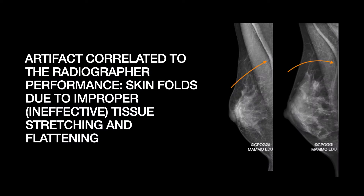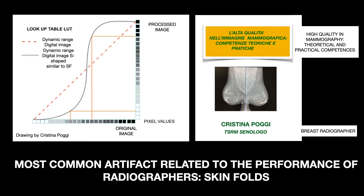We had already talked about radiographic anatomy in the first video — you can find the link at the end of this presentation. Skin faults are the most common artifacts correlated to the radiographer's performance in mammography, but they are also due to the dynamic range of digital mammography, which is so much wider than that of an analog one. This is the reason why we can see faults that are very small and thin, and even of very low density in digital mammography.